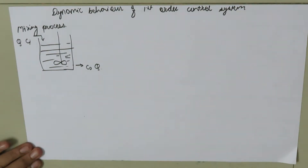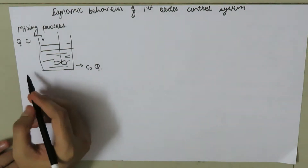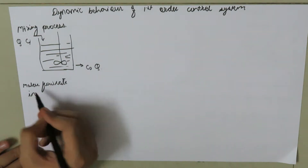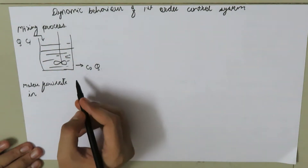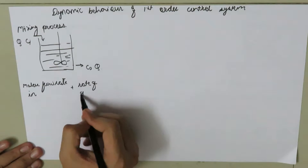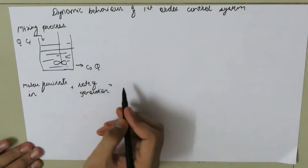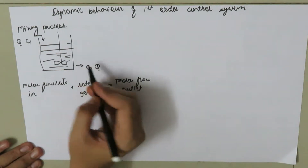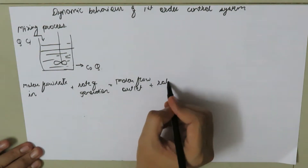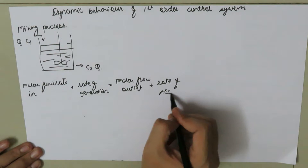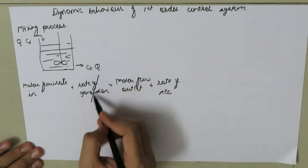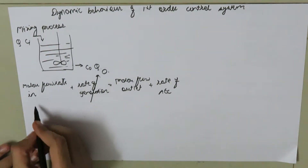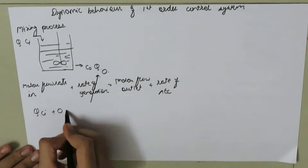Recalling the mole balance from chemical reaction engineering: the molar flow rate at the inlet plus the rate of generation equals the molar flow rate at the outlet plus the rate of accumulation. Since there is no rate of generation, we neglect that term.